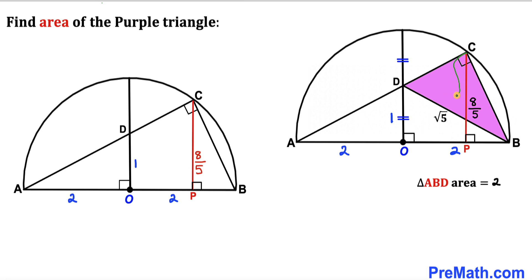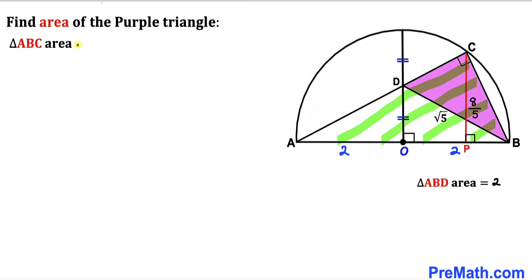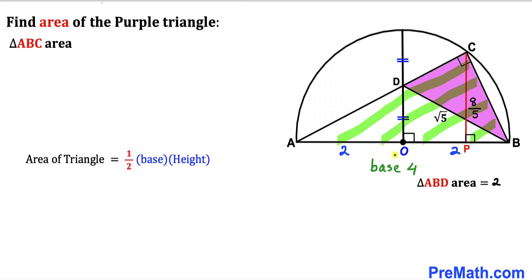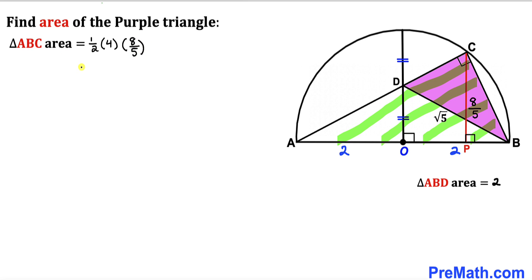So height CP = 8/5 units. Now we calculate the area of triangle ABC. Using Area = ½ × base × height, the base is the diameter AB = 4 and the height is CP = 8/5. So area of triangle ABC = ½ × 4 × (8/5) = 16/5 square units.